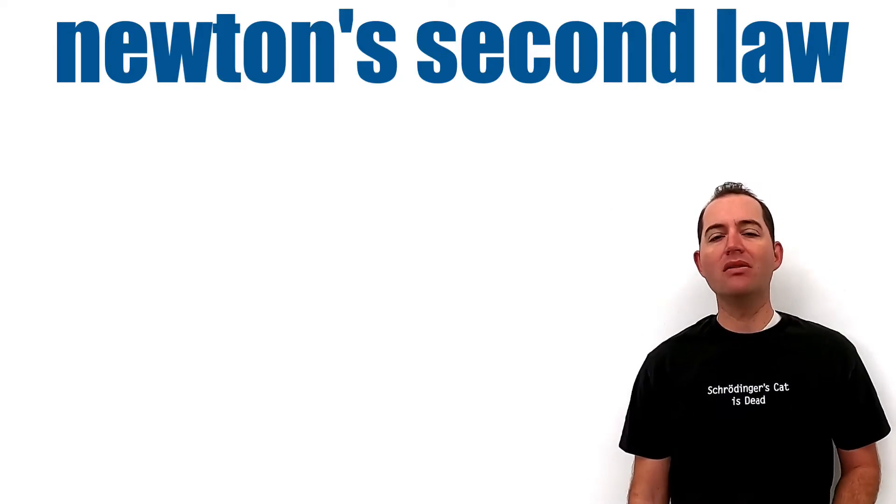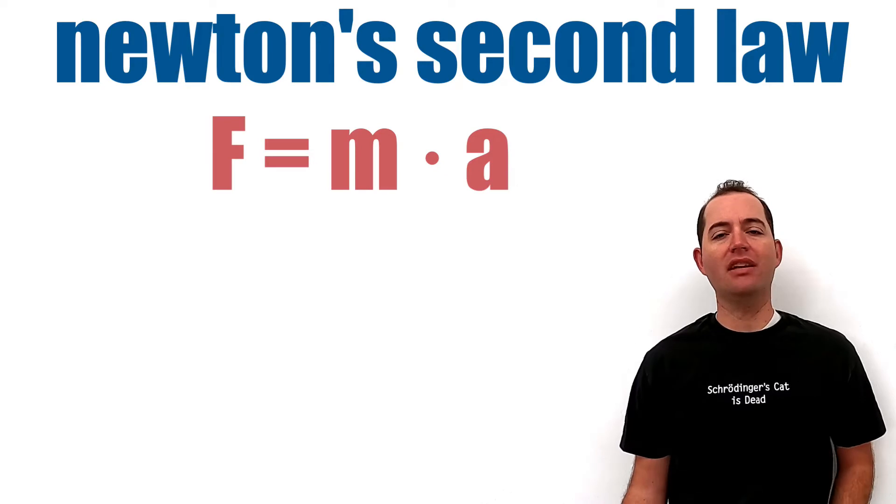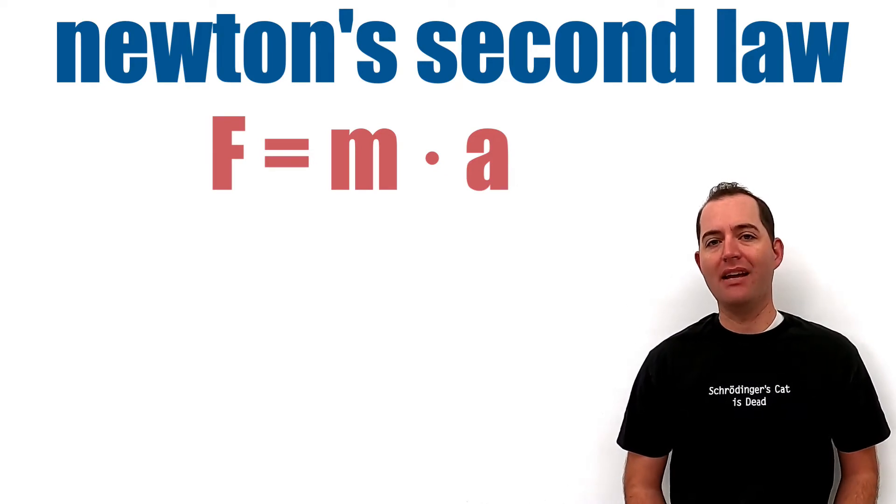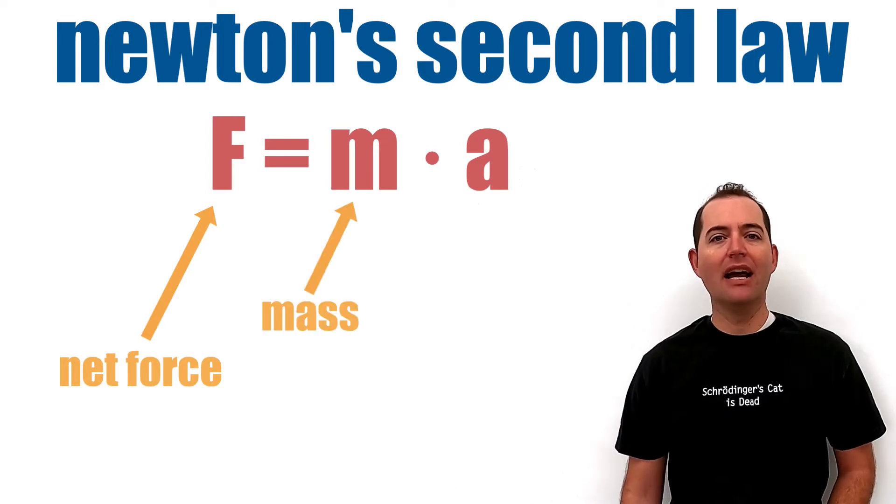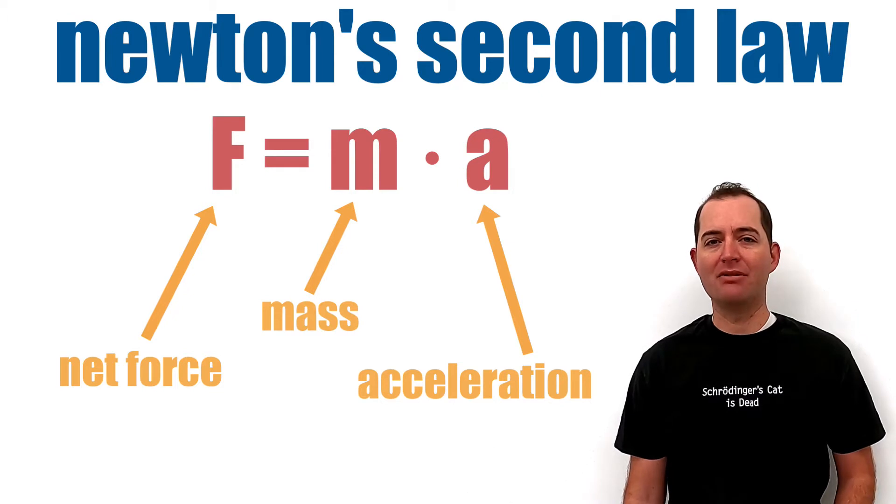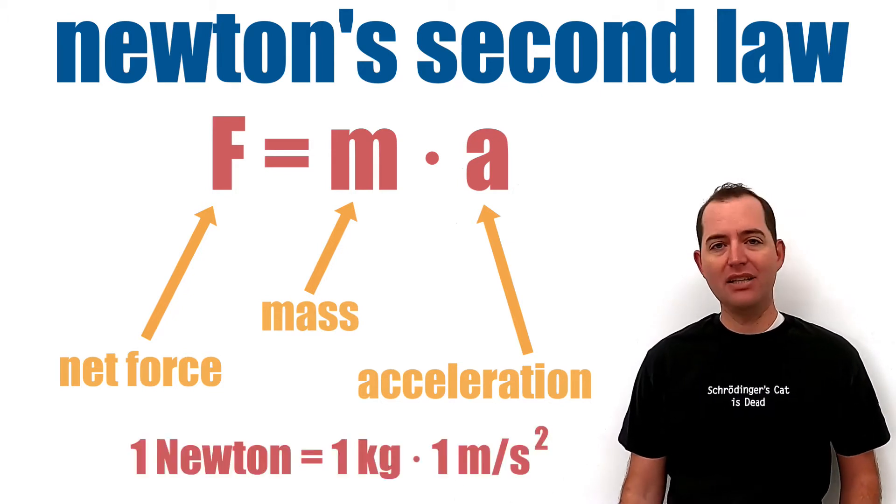Newton's second law of motion is most often represented by the mathematical equation F equals M times A, where F represents the net force acting on the object, M represents the mass of the object, and A is the acceleration of the object. The unit of force is a Newton.